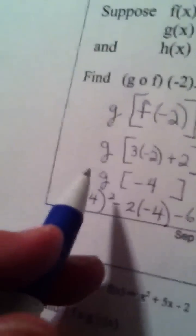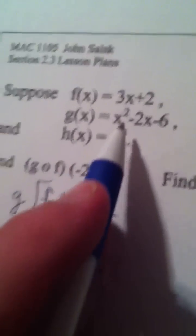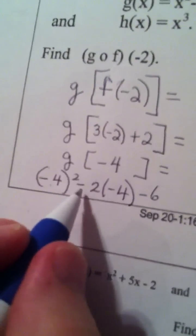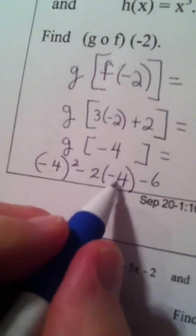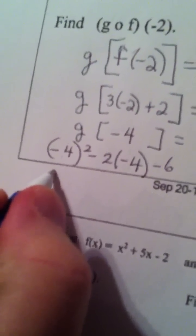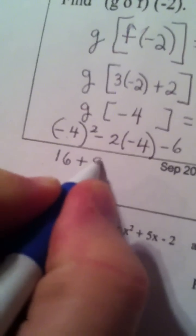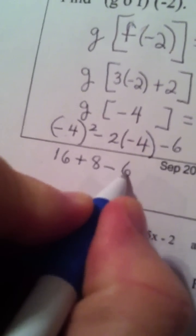Because look what g of x did. Input squared minus 2 times the input, minus 6. So negative 4 quantity squared, minus 2 times negative 4, minus 6. So we get 16 plus 8, minus 6.